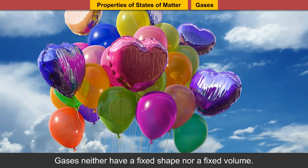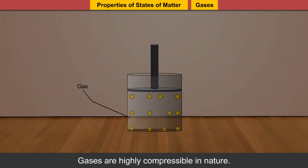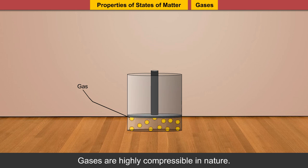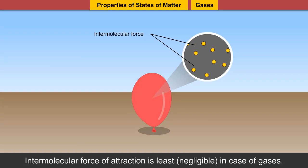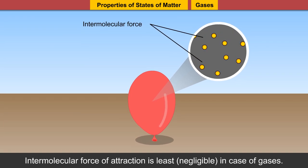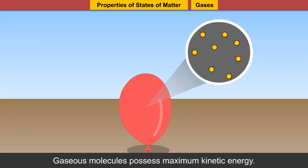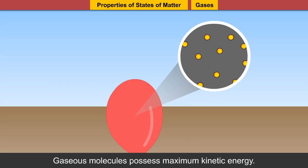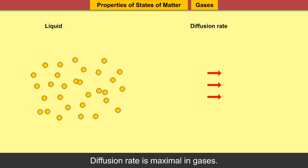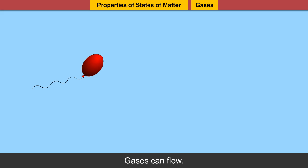Gases neither have a fixed shape nor a fixed volume. Gases are highly compressible in nature. Intermolecular force of attraction is least or negligible in case of gases. Intermolecular spacing is maximum in gases. Gaseous molecules possess maximum kinetic energy. Diffusion rate is maximum in gases. Gases can flow.